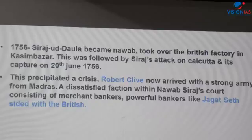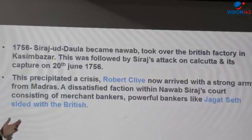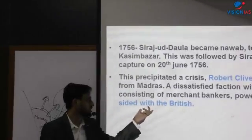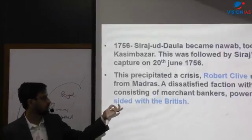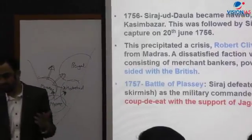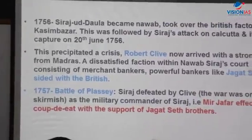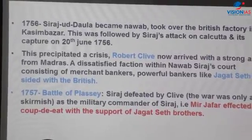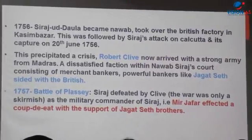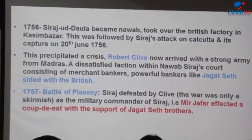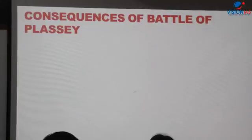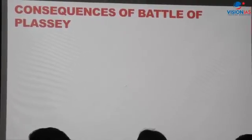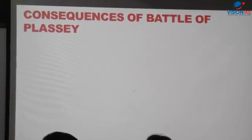Once the crisis was precipitated, Robert Clive arrived with a strong army from Madras. A dissatisfied faction within the Nawab's court — consisting of powerful merchant bankers like the Jagat Seth — sided with the British. The Battle of Plassey was merely a skirmish, not a full-blown battle. The military commander Mir Jafar effected a coup de grace with the support of the Jagat Seth brothers.